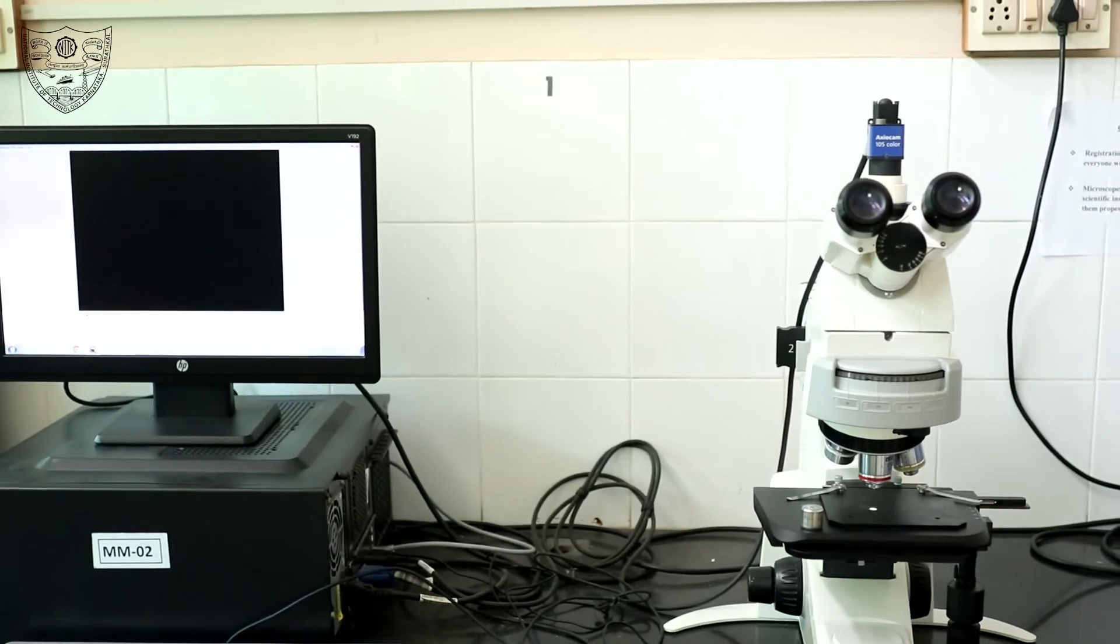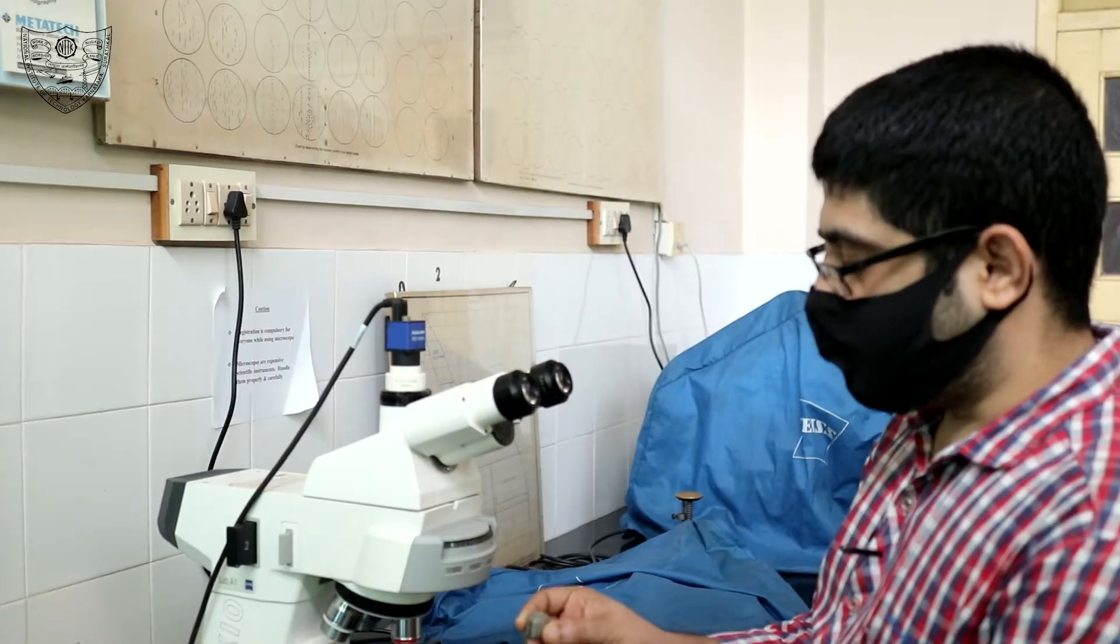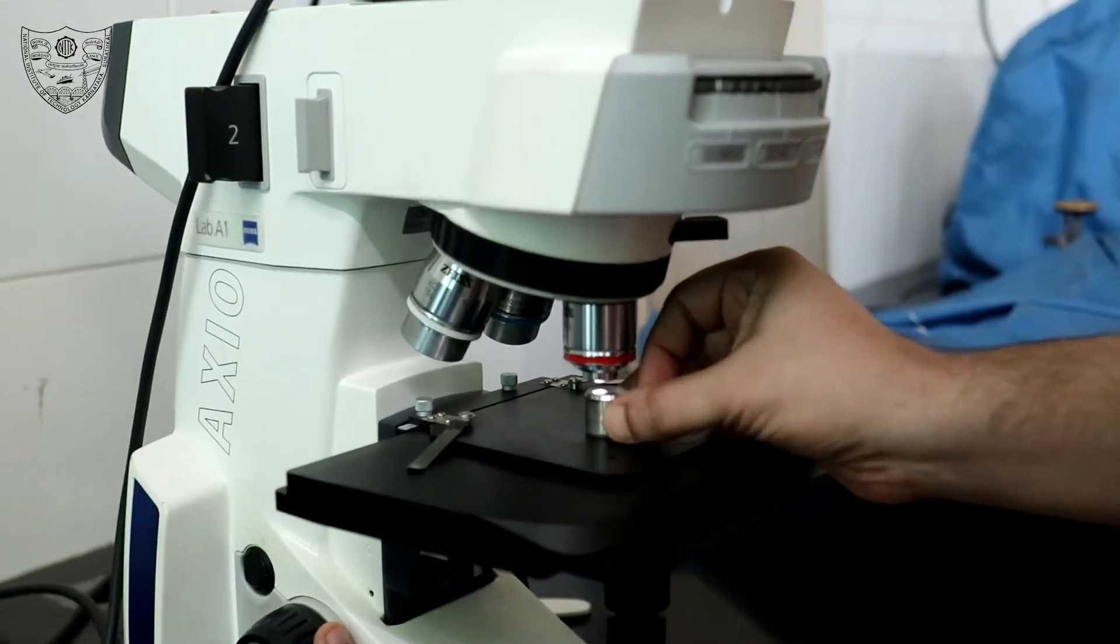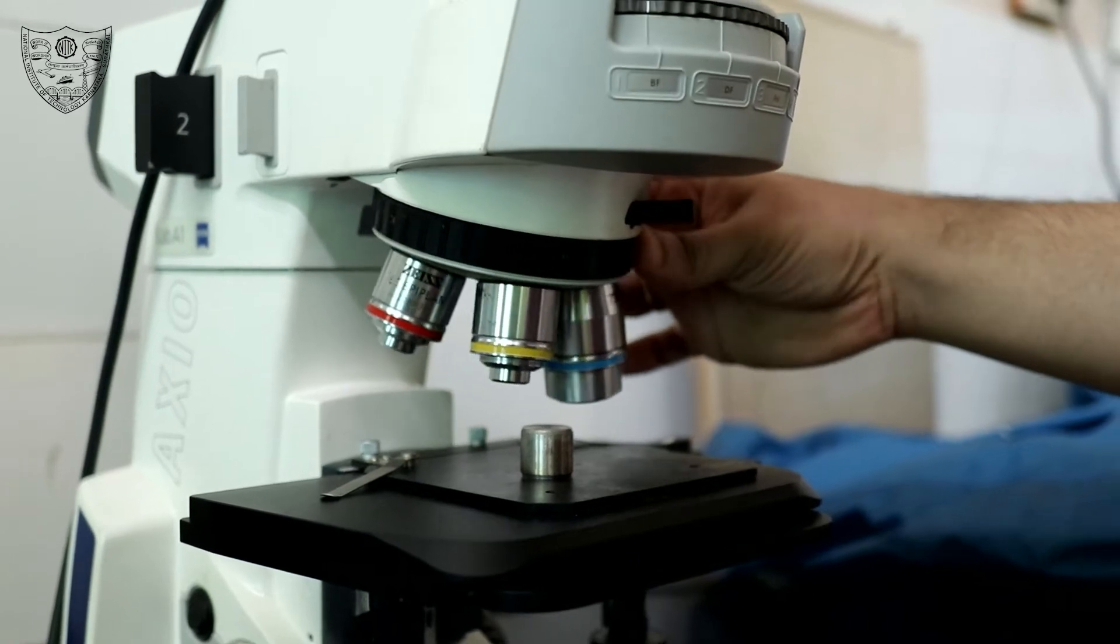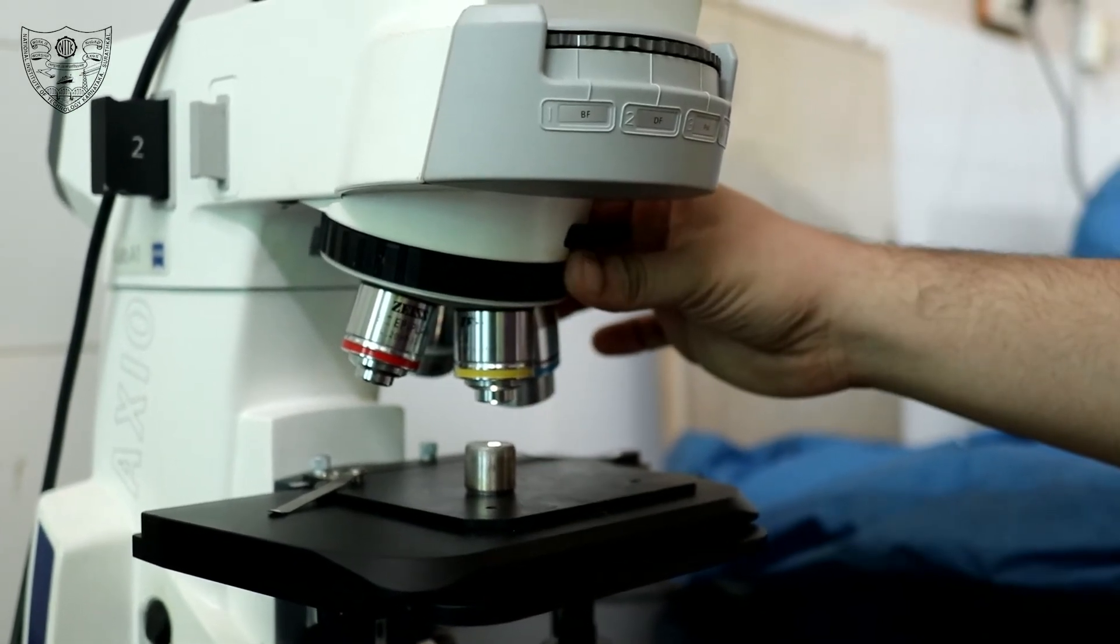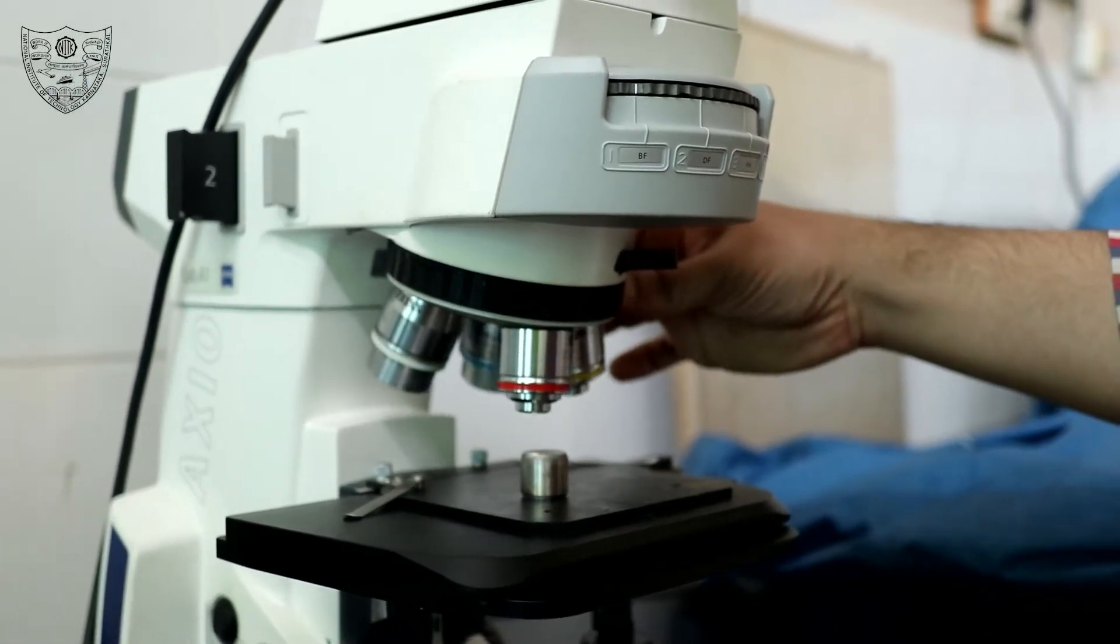The final step in microstructural determination is to observe the sample under an optical microscope. The first step is to place the sample and adjust the microscope in order to focus the sample and choose a particular magnification.